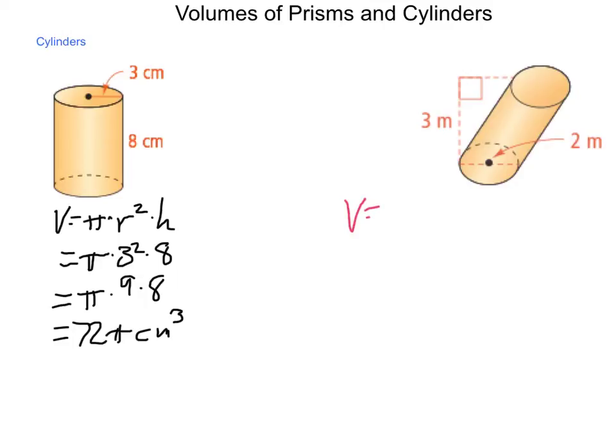So volume here is going to be pi times the radius squared times height which will be pi times one squared times three. So we get three pi cubic meters for our volume of the cylinder.